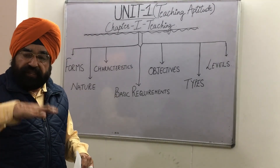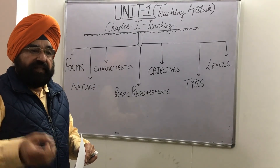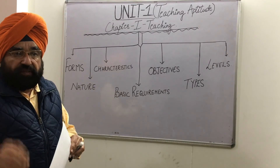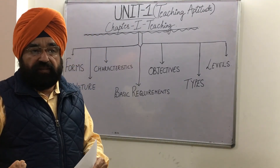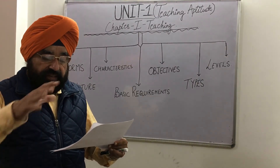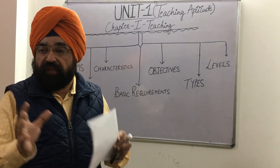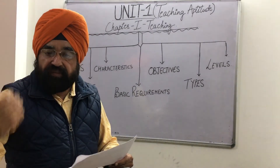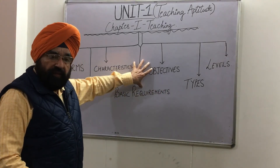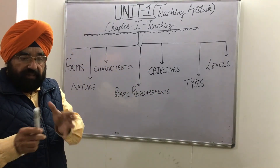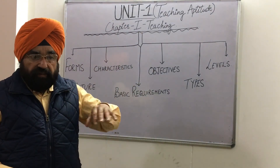The levels of teaching arise with age. Memory level is for younger kids — the teacher is overall in charge and whatever the teacher tells, students follow and memorize. Understanding level is when students attain an age where they start understanding things. Reflective level comes after understanding level — here students not only understand but also give feedback and solve certain problems given by the teacher. This concludes Chapter 1 of Unit 1 Teaching Aptitude on Teaching. Thank you very much.